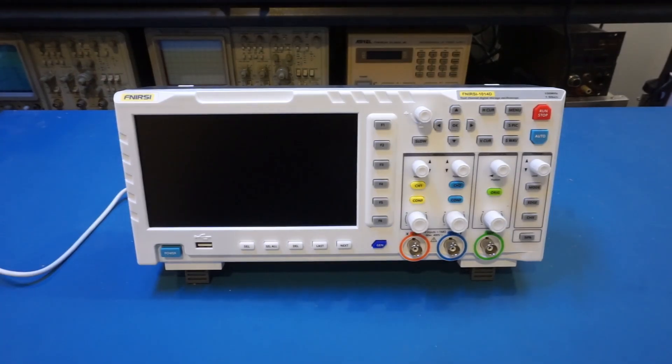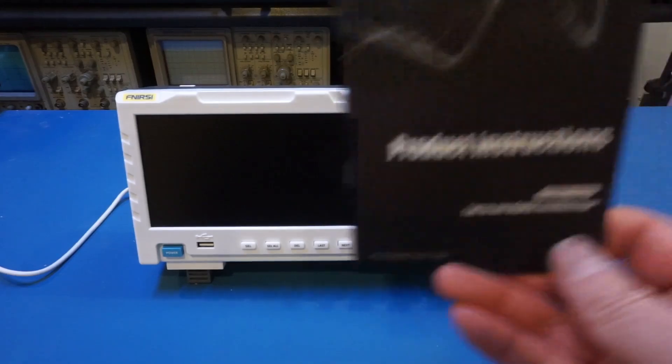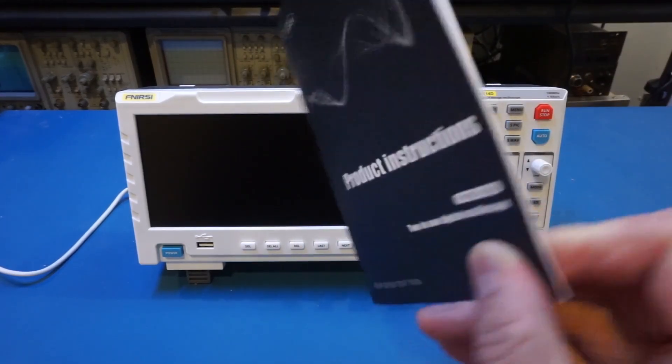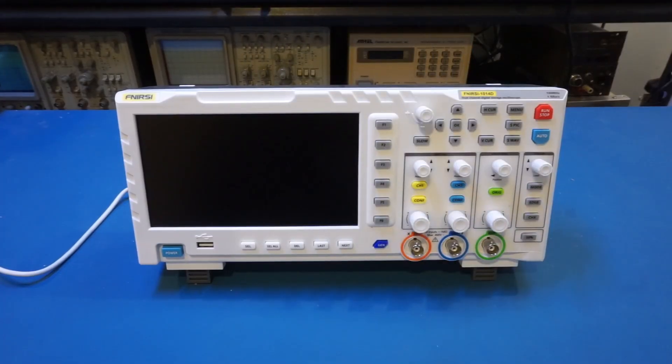This scope comes in a generic carton box with all the accessories like the power brick, probes, USB cables, etc. as you would expect. While you do get a printed version of the product instruction manual, as you can see it's very thin and not as detailed as one would expect.